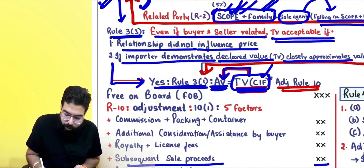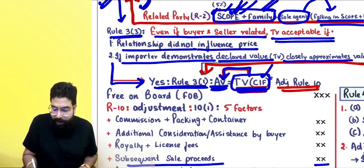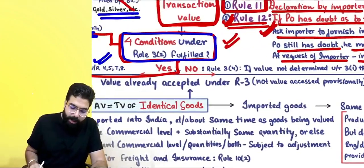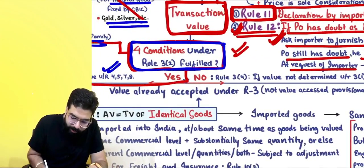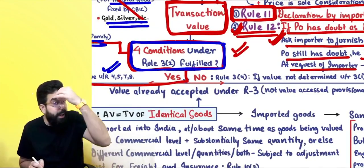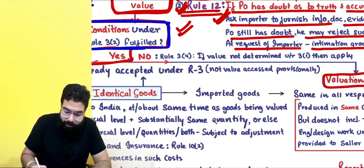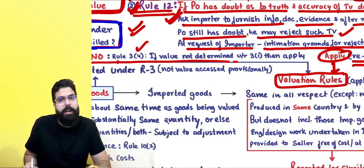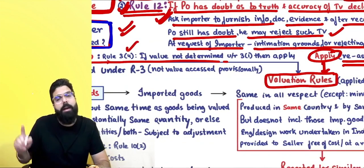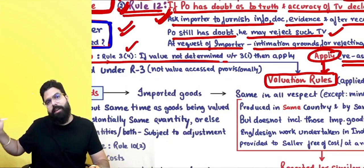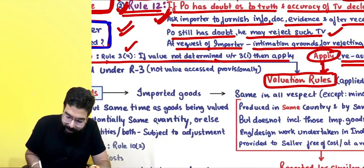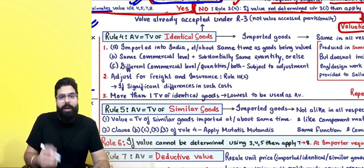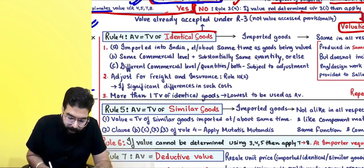If Rule 3(2) conditions are satisfied, Rule 3(1) says the assessable value equals the transaction value, subject to adjustment under Rule 10. If Rule 3(2) conditions are not satisfied and the transaction value is not acceptable, Rule 3(4) says apply the valuation rules.